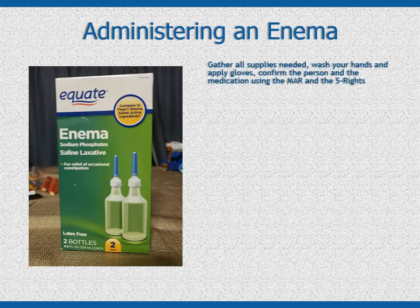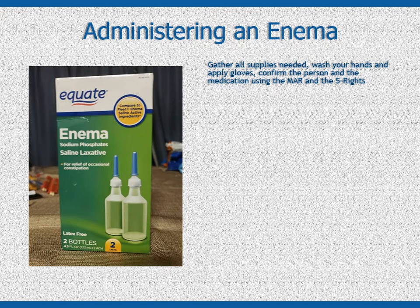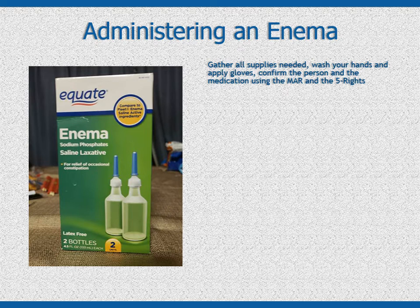Steps for administering an enema. Gather all of the supplies you will need: the premixed prescribed solution, several 4x4 gauze pads or clean paper towel, clean gloves, linen saver pad, and water-soluble lubricant. Be sure there is a toilet nearby or have a bedpan ready, the MAR, and the person receiving the medication. Wash your hands and apply a pair of clean gloves. For each person and medication, match the person and the medication to the person's name and the medications that are due on the MAR. Always use the 5 rights plus 2 each and every time you administer or supervise the self-administration of medication.